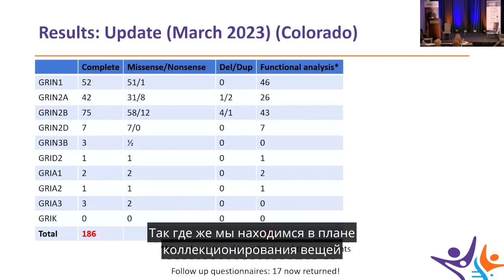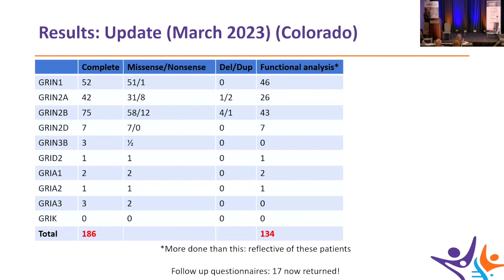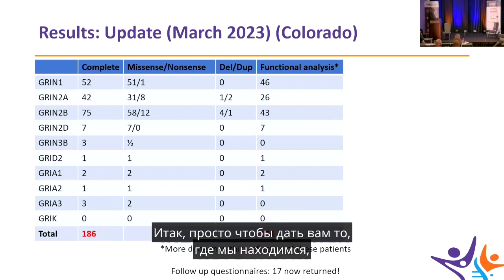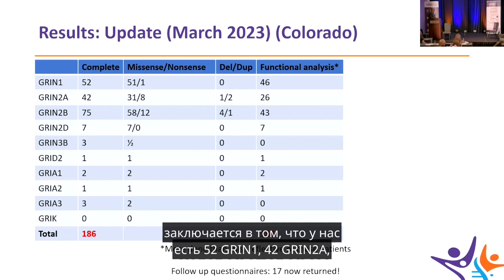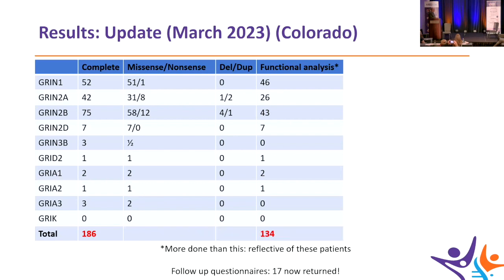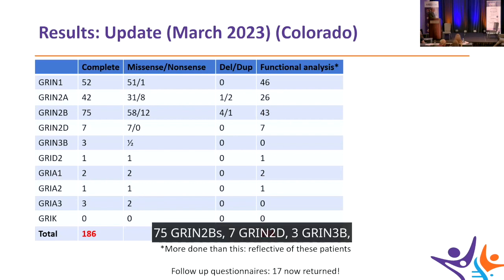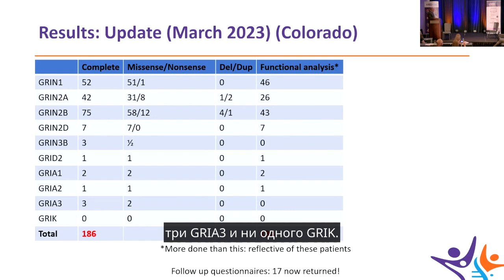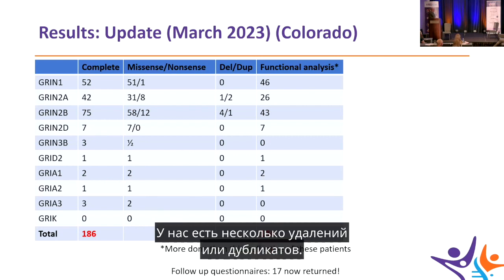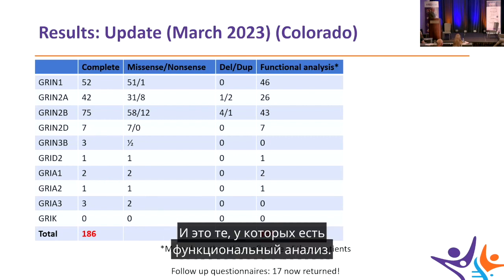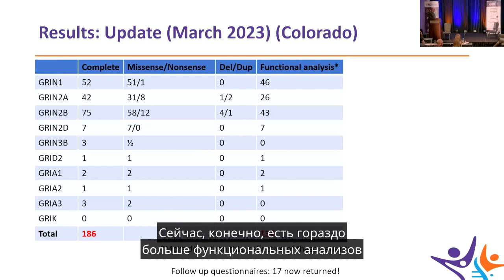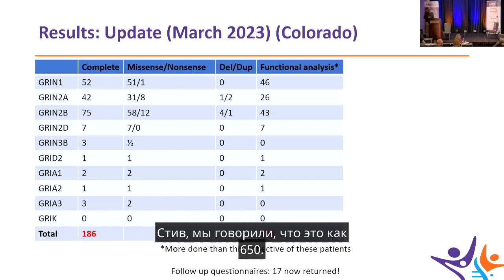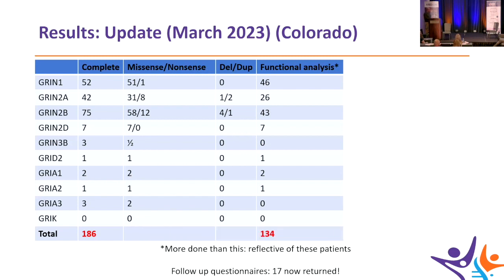The University of Colorado cohort currently includes 52 GRIN1s, 42 GRIN2As, 75 GRIN2Bs, 7 GRIN2Ds, 3 GRIN3Bs, and no GRICs yet. Variants break down into missense and nonsense categories, with a handful of deletions or duplications. Of these, a subset have undergone functional analysis — overlapping with Steve's lab's roughly 650 total. Seventeen follow-up questionnaires have been returned, and the team thanks families for completing them.